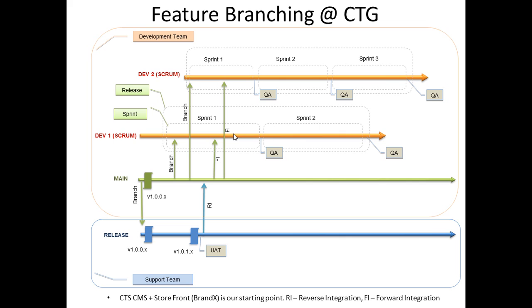After the first team completes its work, it is time for end-to-end regression testing. In order to proceed with this type of testing, we are required to merge the codebase from our development branch into main and then perform a QA deployment from that main branch. If our regression testing is a success, we move into the UAT testing phase by merging our main branch with the release branch and then deploying our project into the UAT environment from our release branch. We do similar merging after our second team completes its work.